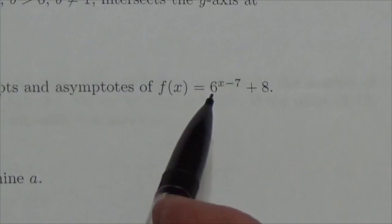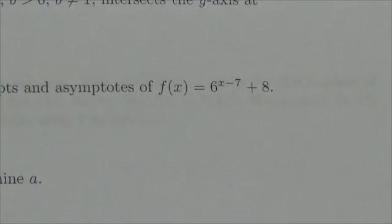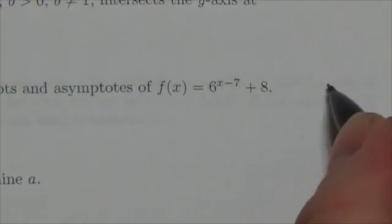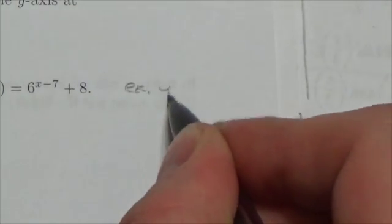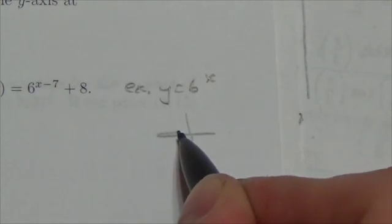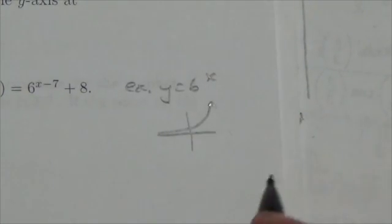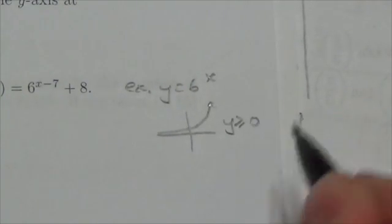Let's slide over here. 6^(x-7) + 8. Now we're going to determine the range here. Well, an exponential function - just think about an exponential function. If we had for example y = 6^x, that would look like this: slide along the x-axis and shoot up here. The range here would be y is greater than or equal to zero.